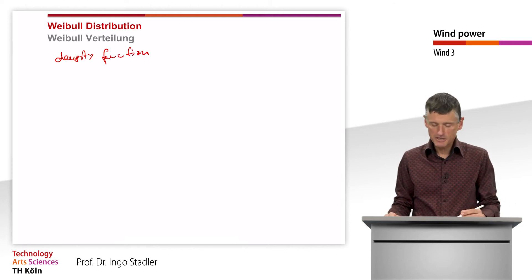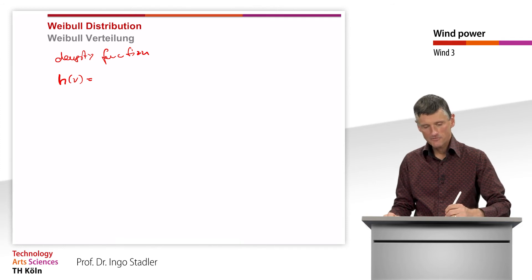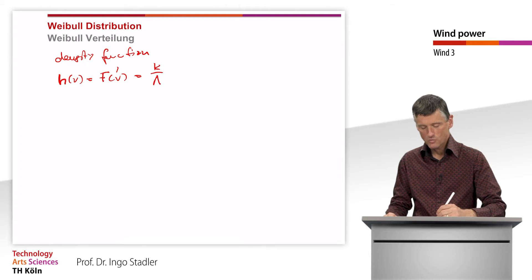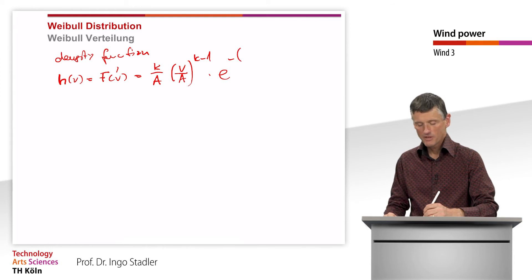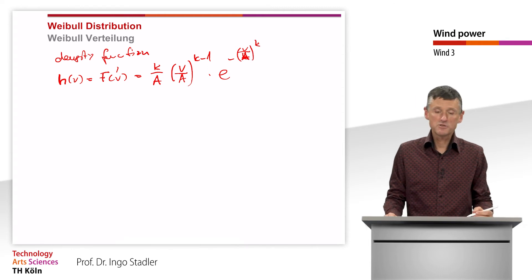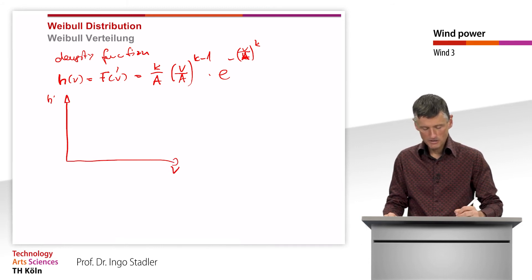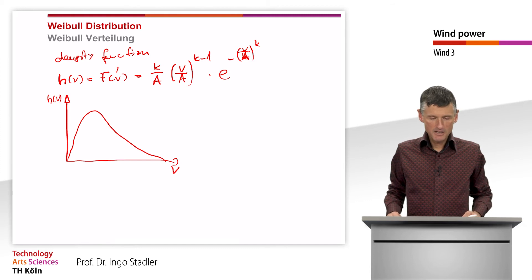The density function h(v) is simply the derivative of the cumulative frequency F(v), and we get: h(v) = (k/A) · (v/A)^(k−1) · exp(−(v/A)^k). That is a bit more complex, and when we plot the function we get the typical curve we saw in the first slides for the density distribution.